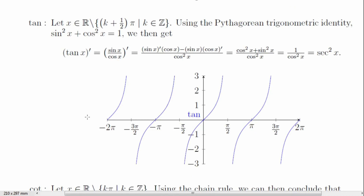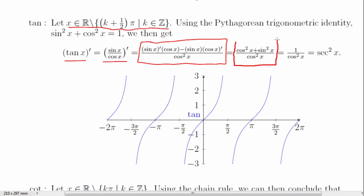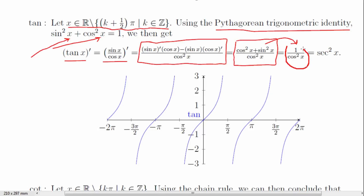Moving on to tangent, we let x be a number in its domain and rewrite tangent as sine over cosine. Applying the quotient rule and simplifying, we end up with cosine squared of x plus sine squared of x in the numerator. Recognizing the Pythagorean trigonometric identity, that equals 1, giving us 1 over cosine squared of x. Rewriting in terms of the six trig functions, we only need secant, so the derivative of tangent of x is secant squared of x.